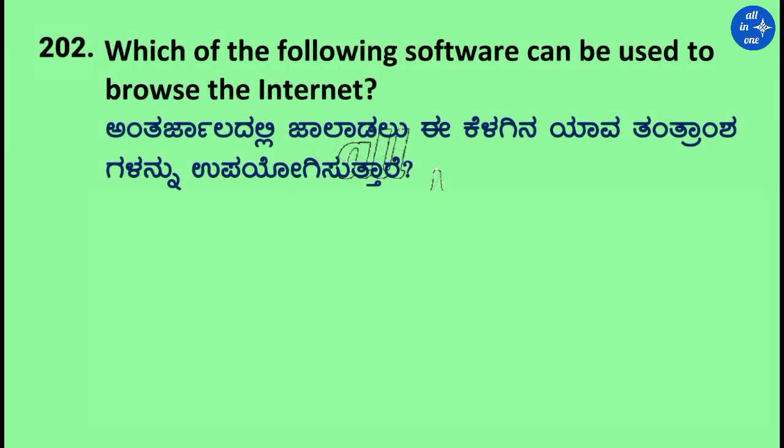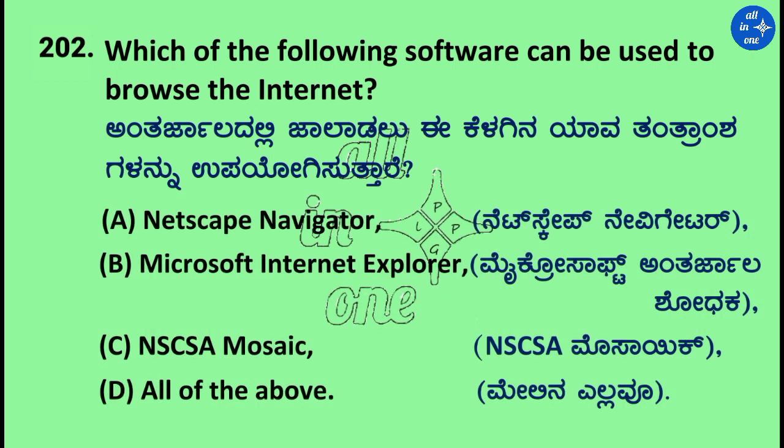Question: Which of the following software can be used to browse the internet? Options: Netscape Navigator, Microsoft Internet Explorer, NCSA Mosaic, and All of the above. Right answer is All of the above.